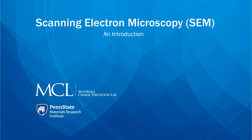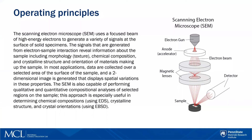A scanning electron microscope uses a focused beam of high-energy electrons to generate a variety of signals at the surface of solid specimens. The signals generated from electron-sample interaction reveal information about the sample, including morphology, chemical composition, and crystalline structure and orientation of materials making up the sample. In most applications, data are collected over a selected area of the surface, and a two-dimensional image is generated that displays spatial variations in these properties.